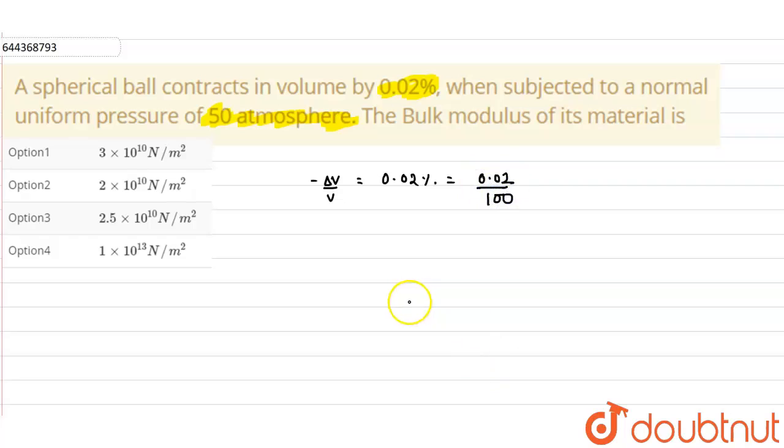Now, when it is subjected to a uniform pressure, so pressure is given to us as 50 atm or what we can write it as 50 into 10 raised to the power of 5 Pascals.